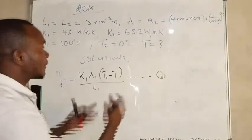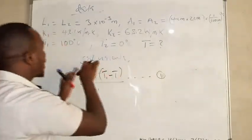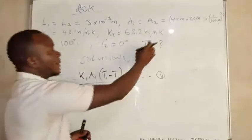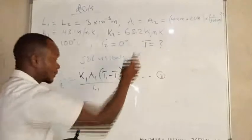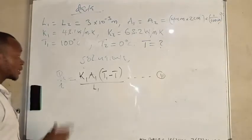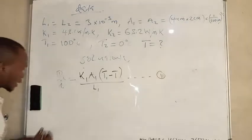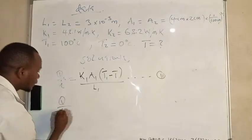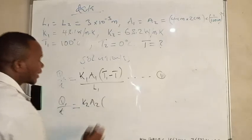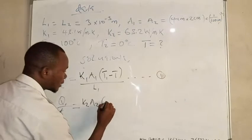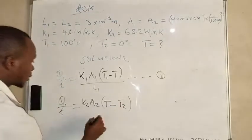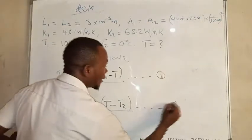For metal plate 2, since heat is flowing toward it and its temperature is 0 degrees Celsius, the final interface temperature T will be greater than zero. So the heat rate Q2 equals K2 times A2 times the quantity T minus T2, divided by L2. We call this equation number 2.